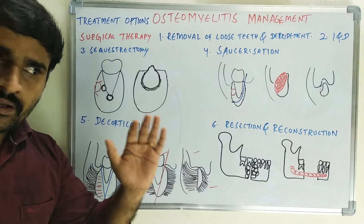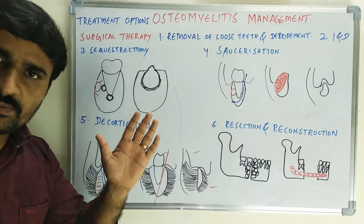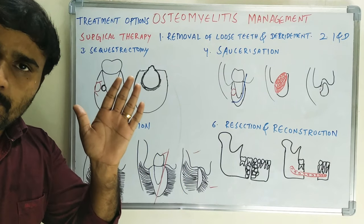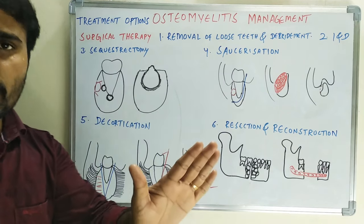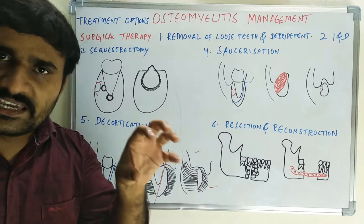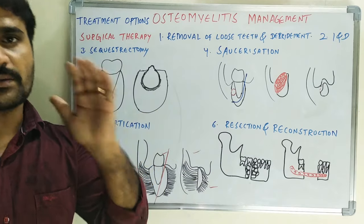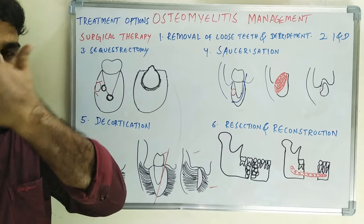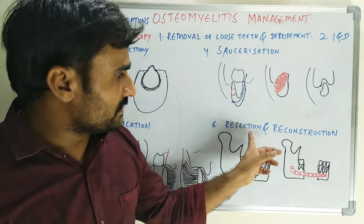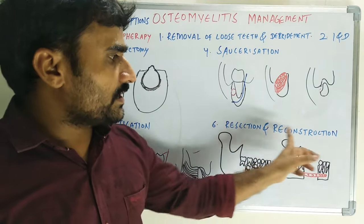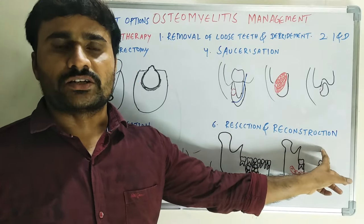The advantage of decortication is that it approximates the buccal mucosal flap to the medullary bone, thereby increasing the blood supply. The next surgical option is resection and reconstruction.